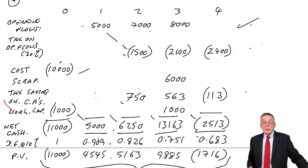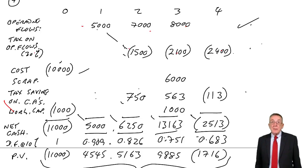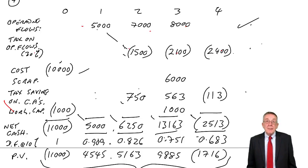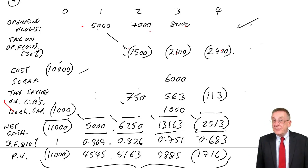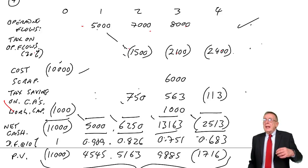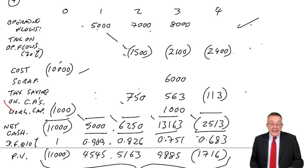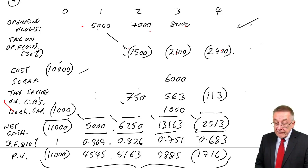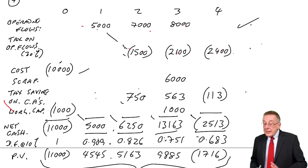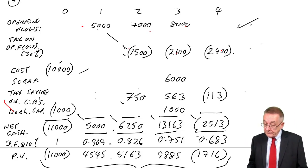We've now dealt with working capital and tax. There's one last topic that appears in virtually every section C long-form question on investment appraisal — inflation. In the next lecture we'll cover inflation, and then we'll have everything needed for this type of question.